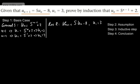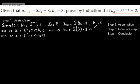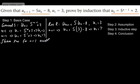Now considering the right-hand side with the recurrence relation, when n equals 1, that gives us u_2 equal to 5 lots of u_1. Since u_1 is 3, we subtract 8, giving u_2 equals 15 minus 8, which is 7. So the first two terms in the recurrence relation match the first two terms in the general statement.